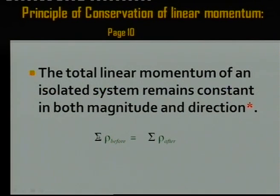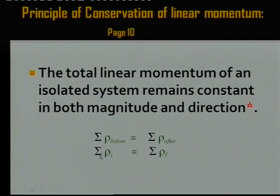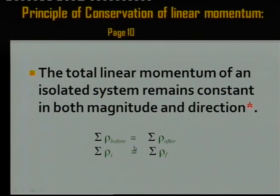The sum of the momenta before anything happens — like a collision or explosion — must be equal to the sum of the momenta after the collision or explosion. That means the sum of the initial momenta must be equal to the sum of the final momenta. That is what we mean by the total remaining constant, whether a collision or explosion happens in the system.